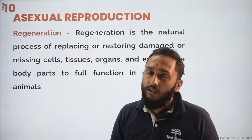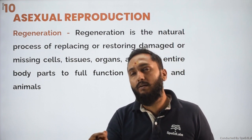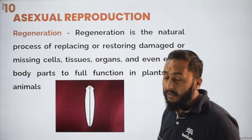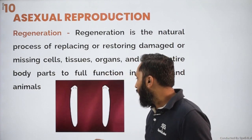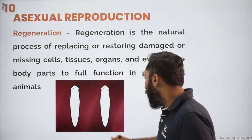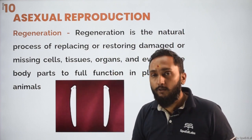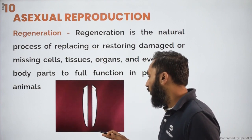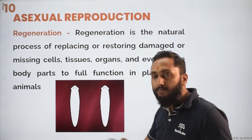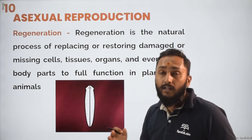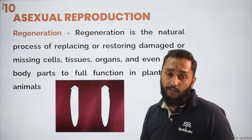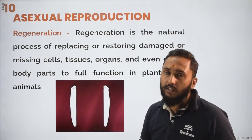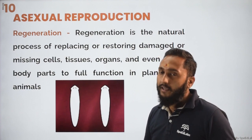Then comes regeneration. Regeneration means that when one organism is accidentally cut, every piece of that organism will develop into a new individual. In the case of Planaria and Hydra, if you cut it, both parts develop into a new individual — whether you cut it horizontally or longitudinally, it can grow. Note that the regrowth of the tail in the case of a lizard is not an example of asexual reproduction.